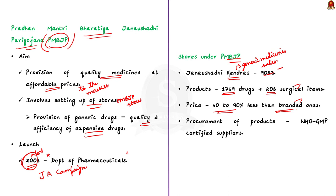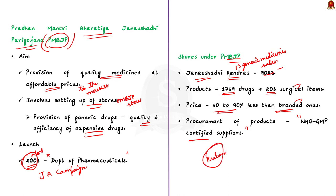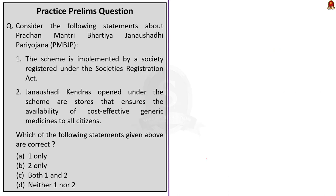The product basket under the PM BJPY scheme includes 1,759 drugs and 208 surgical items. The prices of these products are 50 to 90 percent lesser than branded medicine prices in the open market. The medicines in these stores are procured only from WHO GMP — that is, WHO Good Manufacturing Practices — certified suppliers, to ensure quality. This topic is very important for your prelims exam, so make note of each and every point discussed.